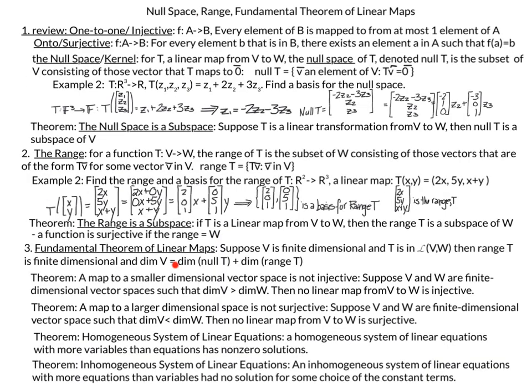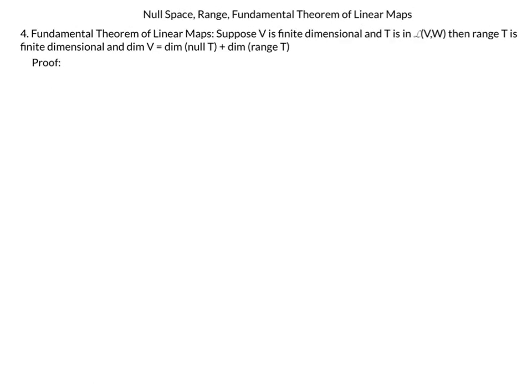Now we look at the fundamental theorem of linear maps. It states: suppose V is finite dimensional and T is a linear transformation from V to W. Then the range of T is finite dimensional — and the null(T) is also finite dimensional since it is a subset of finite dimensional V — and the dimension of V equals the dimension of null(T) plus the dimension of range(T).